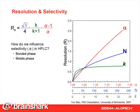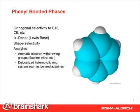Selectivity can be changed in HPLC by changing the stationary phase and the mobile phase. The vast majority of HPLC separations are done in reverse phase mode and the C18 bonded phase is the most popular. However, different bonded phases give different selectivity and are valuable alternatives to C18.